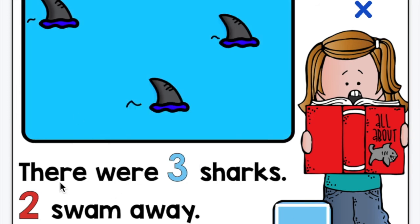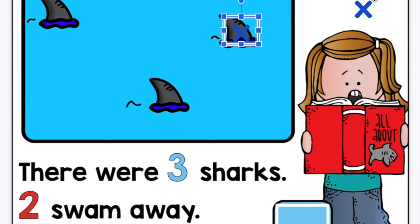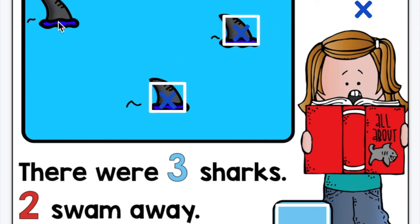Let's read it. There were three sharks — there's my three sharks. Two swam away. How many are left? So I can take the X — you may need to do this, or sometimes you can just do this with your fingers too, that's okay — and I'm taking two away. And how many are left in the ocean? One. So I'm going to put that here in the box.